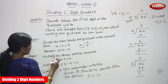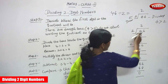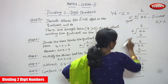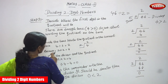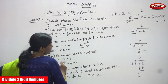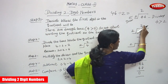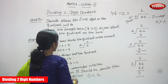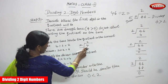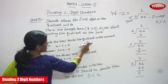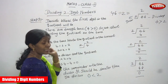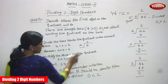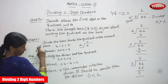Step 2: Divide the tens. Write the quotient in the correct place — that means you have to write the quotient in the tens place. So 4 is going to be divided by 2. 2 into 2 gives 4, so the quotient is 2. You have to write this 2 as the quotient in the tens place, on top of the division, below the dividend.